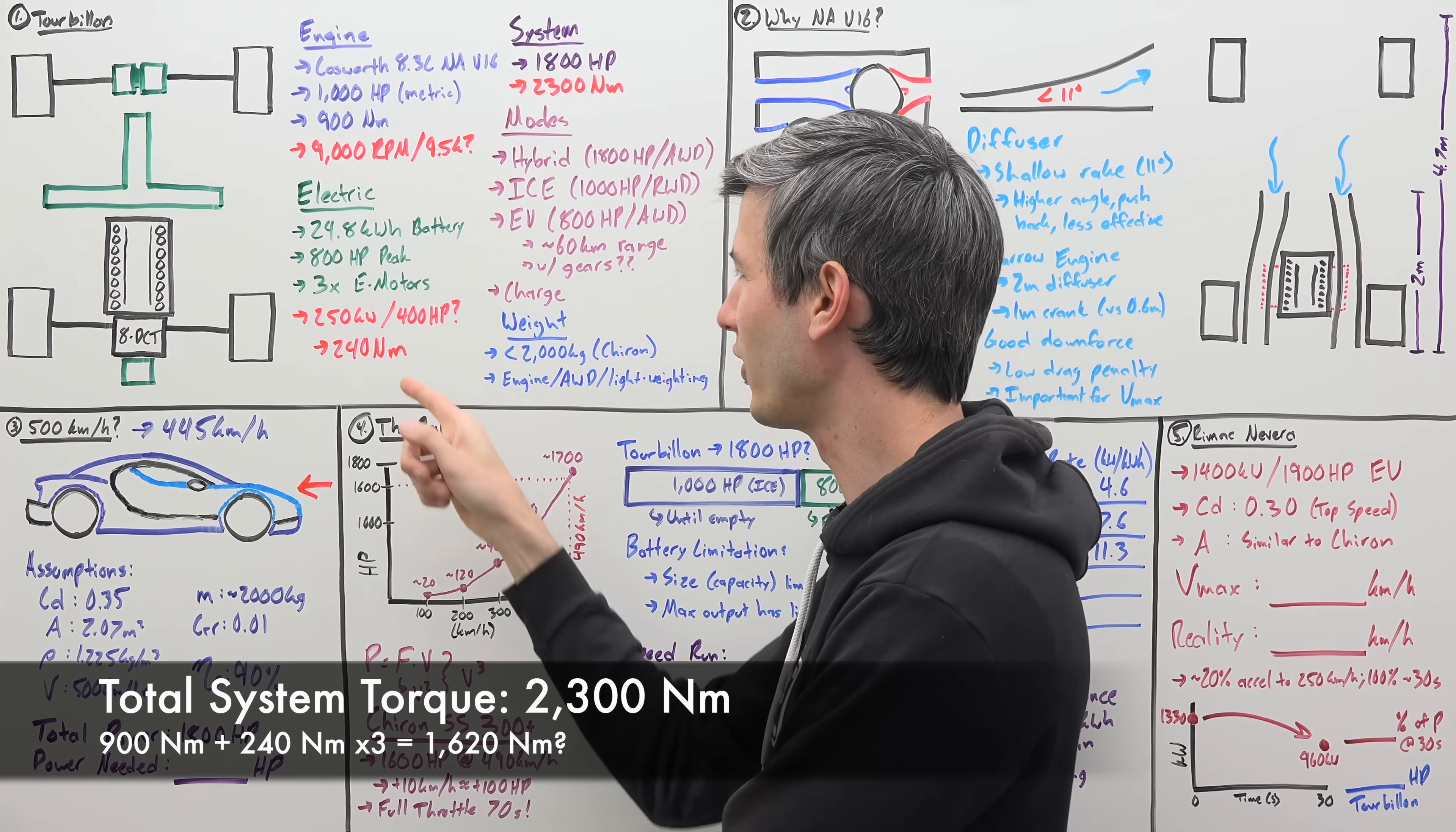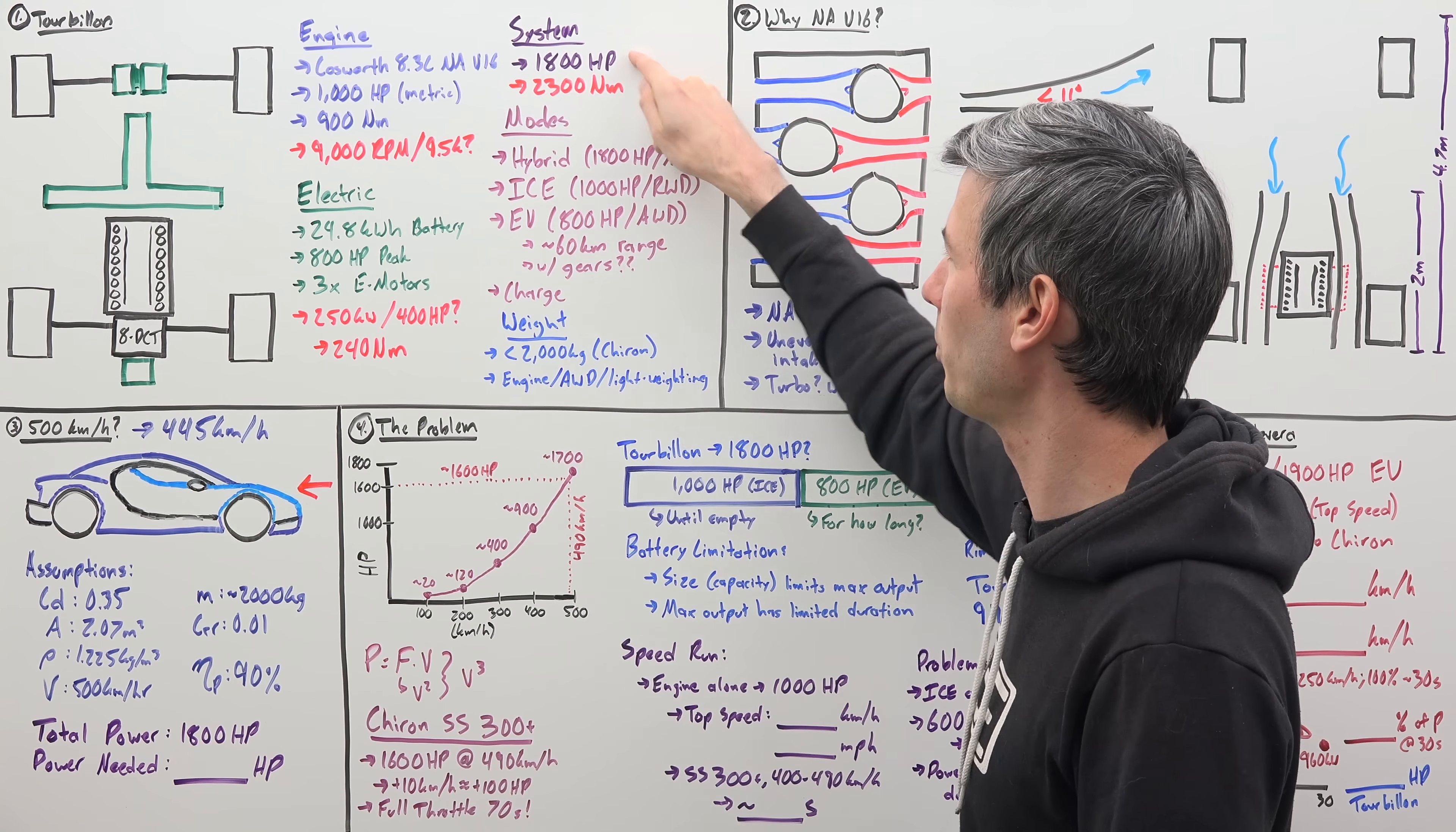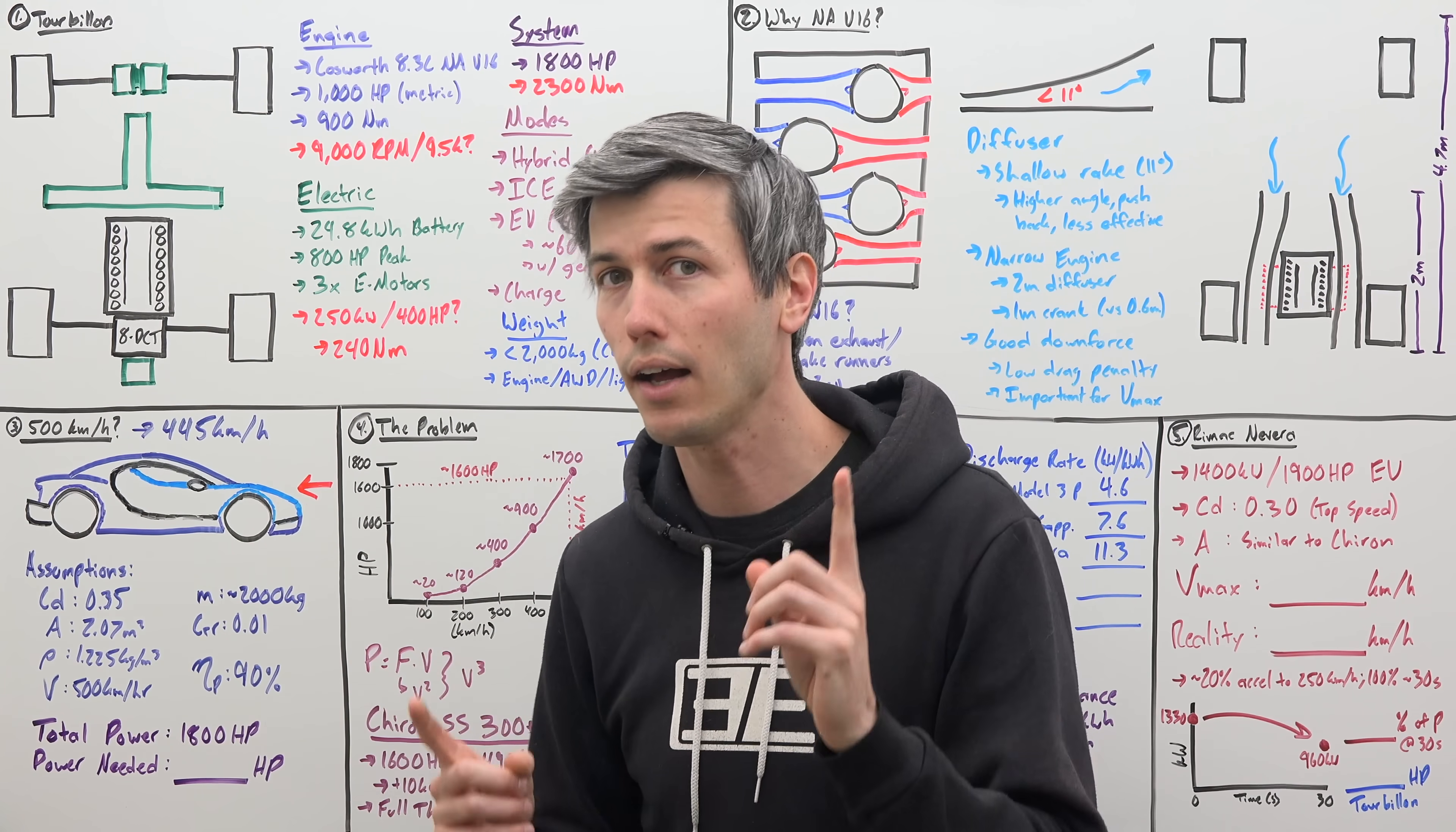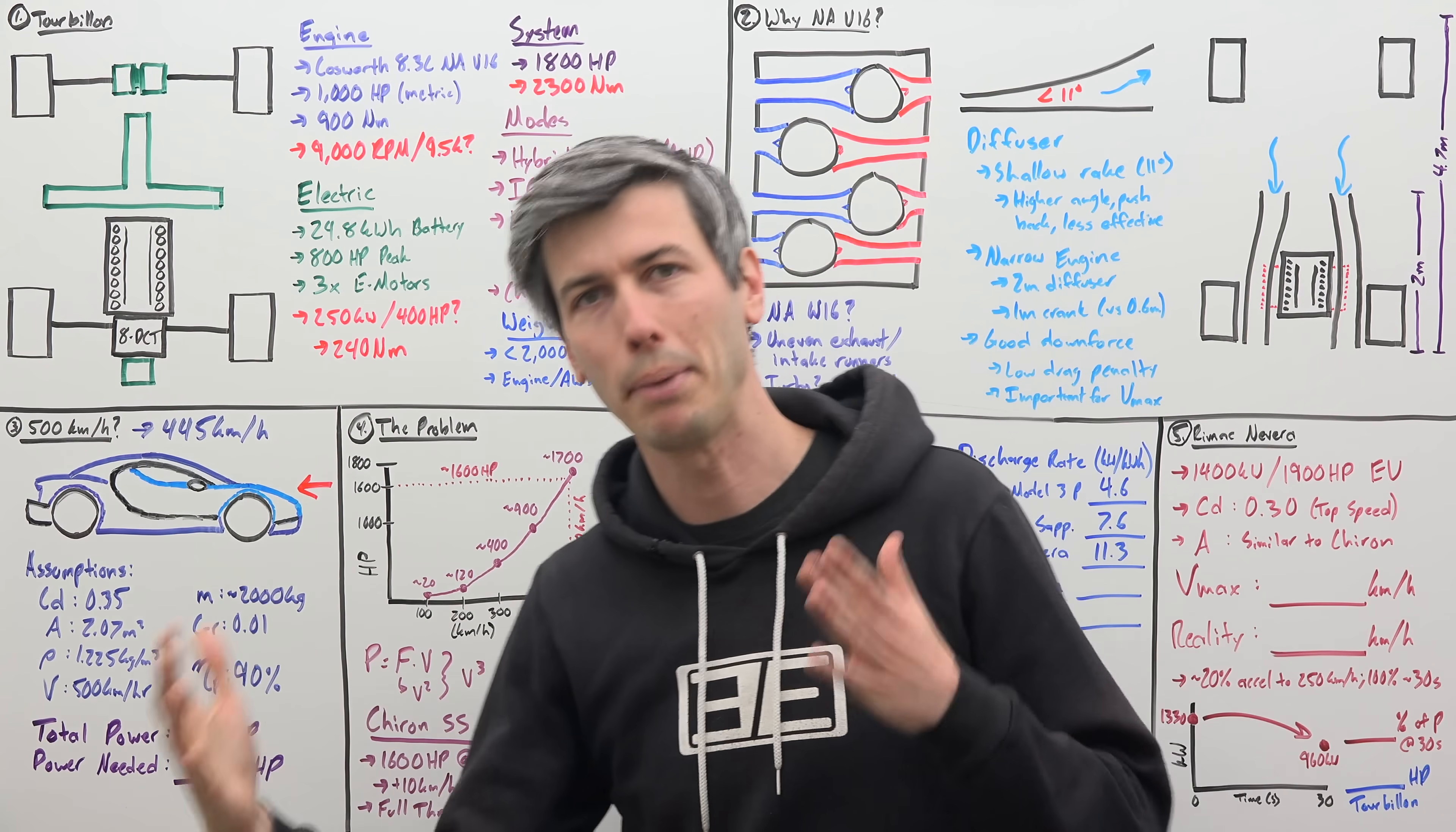Yet the total system torque is 2,300 newton meters. So if you take 900 newton meters and you take 240 times 3, you get 1,620 newton meters, which is not 2,300 newton meters. So I don't know what the numbers are. But the thing that we do know is 1,800 horsepower. This is the big important number. 1,000 of which is coming from the combustion engine and 800 of which is coming from the electric motors because they are limited by the battery pack.